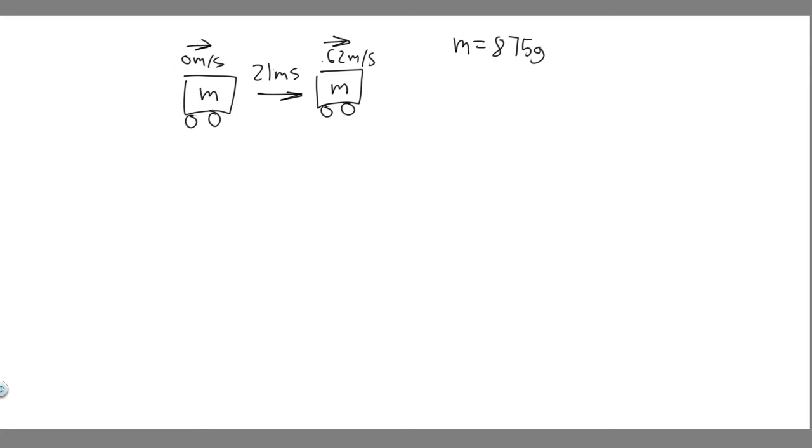So this is what's going on. We have this train at 0 meters per second, and then 21 milliseconds later, it's traveling at 0.62 meters per second. We also know the mass of the train is 875 grams.